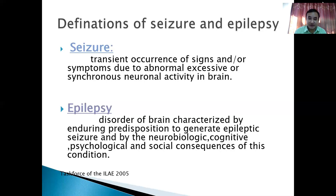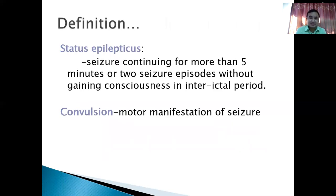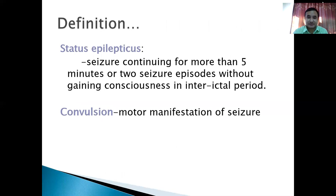If someone has a scar in the brain which we cannot treat or remove, and because of that scar the patient is having recurrent Caesar activity, then that's called epilepsy. The etiology of epilepsy is usually irreversible and cannot be treated. Whereas status epilepticus is a condition where there is Caesar activity lasting for more than five minutes, or two episodes of Caesar occur without the patient regaining consciousness in between.